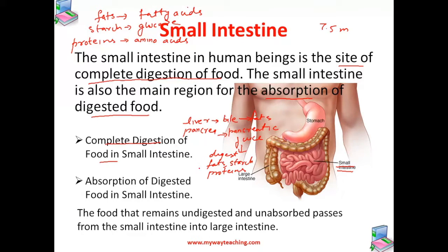The small intestine also releases certain juices called intestinal juices. The function of this juice is to break down starch and carbohydrates into glucose, and proteins into amino acids.